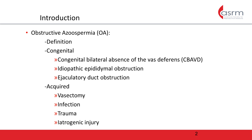Obstructive azoospermia, or OA, is defined as the absence of sperm in the ejaculate caused by a blockage in the male reproductive tract. It accounts for approximately 40% of all cases of azoospermia, and thus represents a significant barrier to reproduction for many male patients.